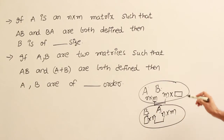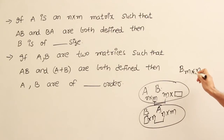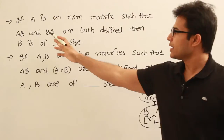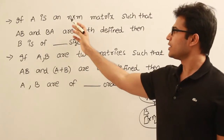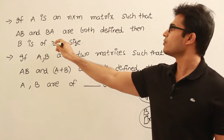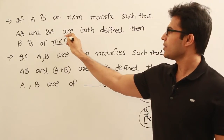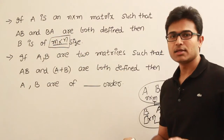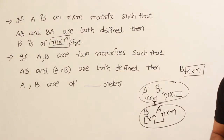So these two conditions together tell us that B has m rows and n columns, therefore B is of size m by n. If both AB and BA are possible and A is an n by m matrix, then the size of B has to be m by n — and that is the only possibility.